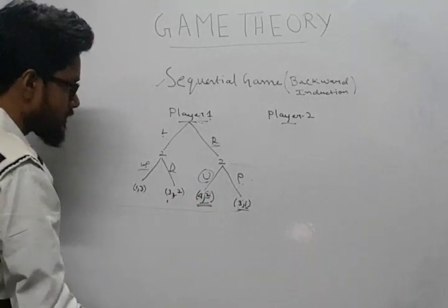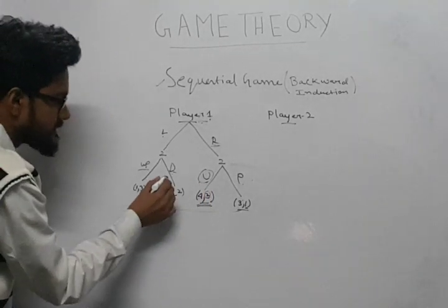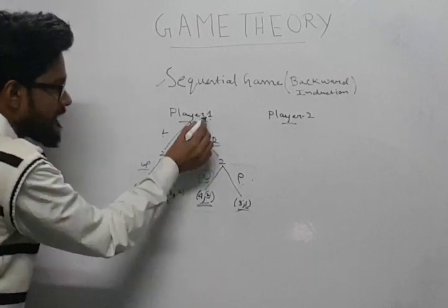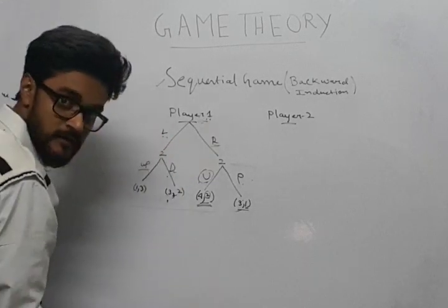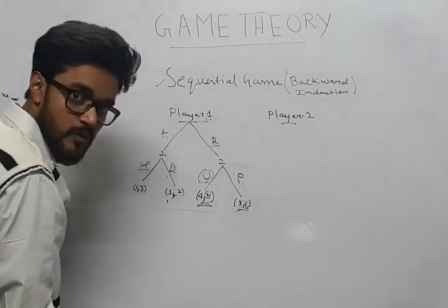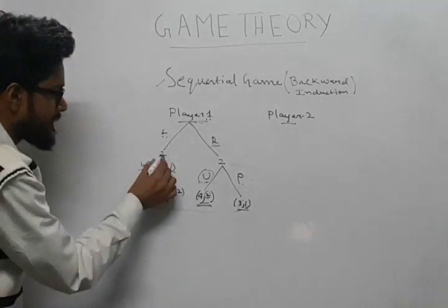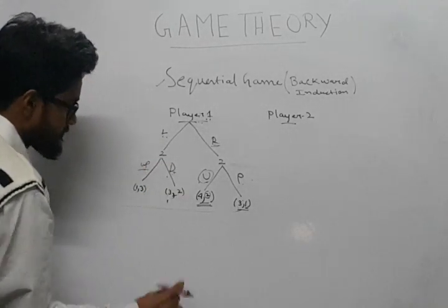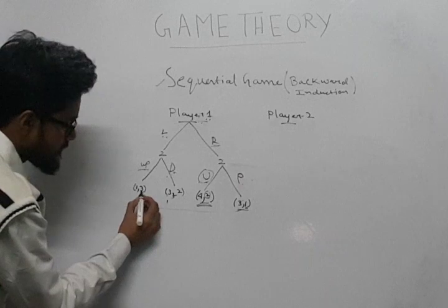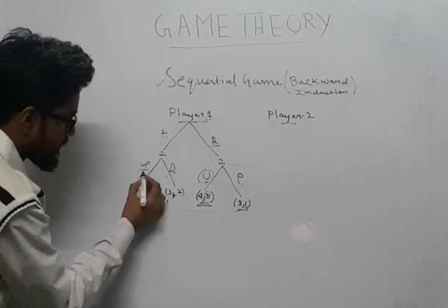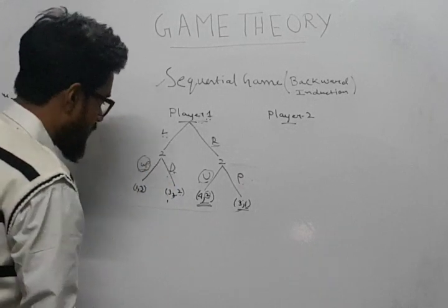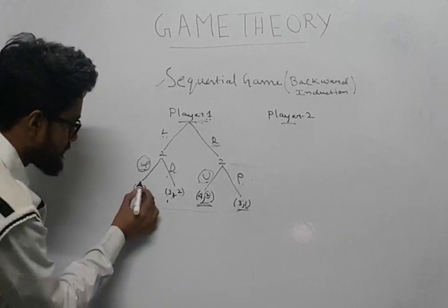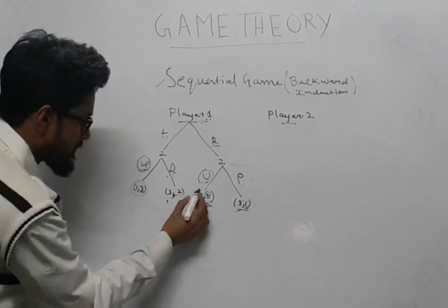Now comparing that with the case where player 1 plays L: player 2 again has two options. As you can see, 3 is more than 2, so player 2 will always play up in this case as well.